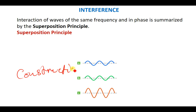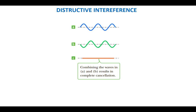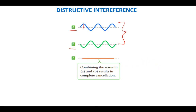There is also destructive interference. Imagine wave A and a second wave that is exactly the opposite of wave A — where one has a positive amplitude, the other has a negative amplitude. When you add these two waves, they cancel out completely, resulting in a straight line. This is known as destructive interference.